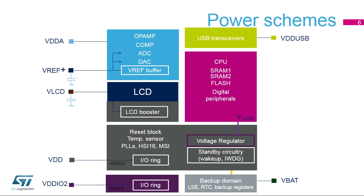STM32L4 MCUs feature several independent supplies for peripherals: VDDA for the analog peripherals, VDD-USB for the USB transceiver, and VDD-IO2, which supplies the 14 I/Os on port G. The VLCD pin provides the LCD common and segments reference voltage. The VREF+ pin provides the reference voltage to the analog-to-digital and digital-to-analog converters, and can be used as an external buffer reference for the application.